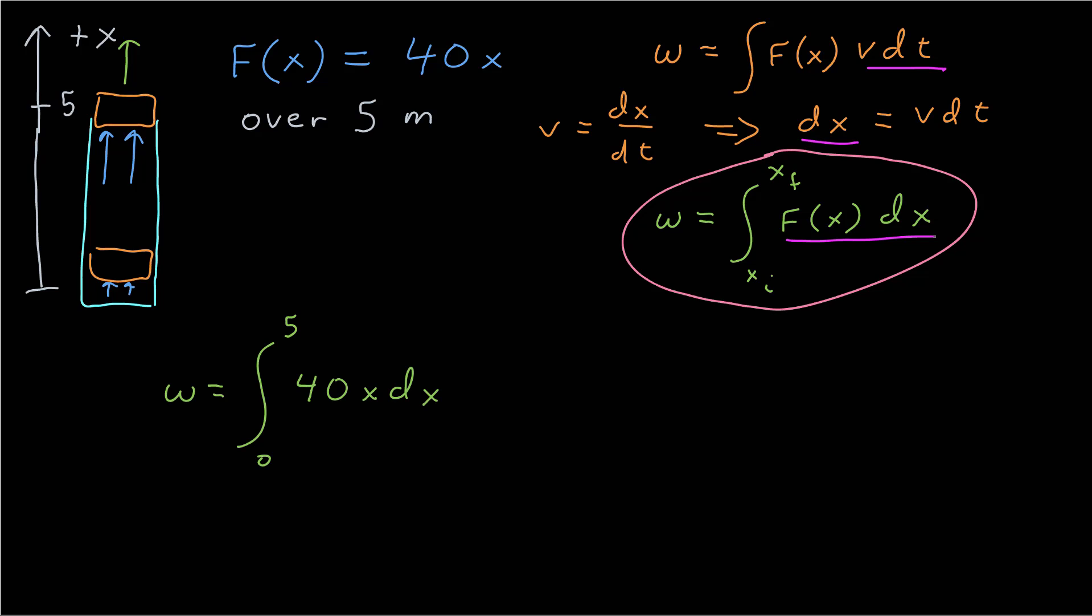If we go back to our problem, that gives me work between 0 and 5, the initial and final position, of 40x. Here's the function integrated over x. Again a simple polynomial. The indefinite integral is 40x squared over 2, or 20x squared, evaluated between 5 and 0, which gives me energy added to the system of 500 joules.